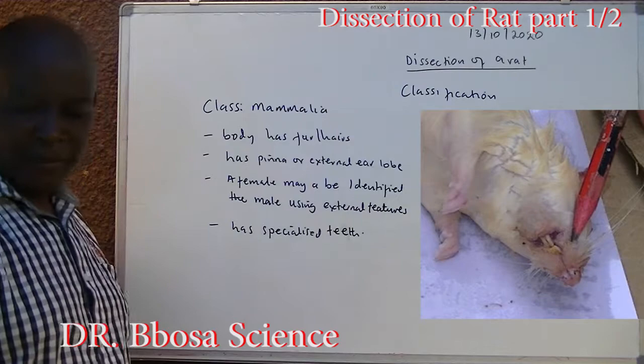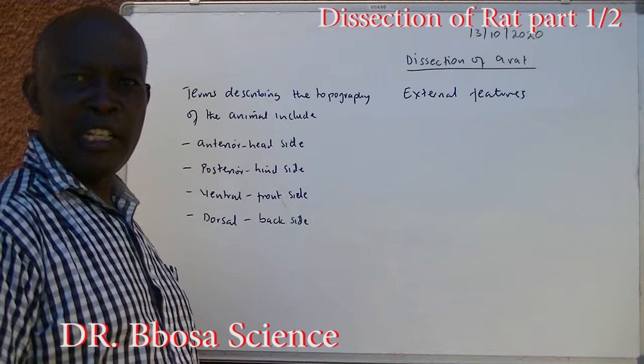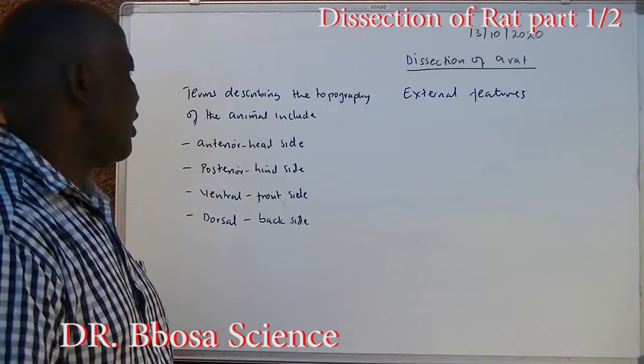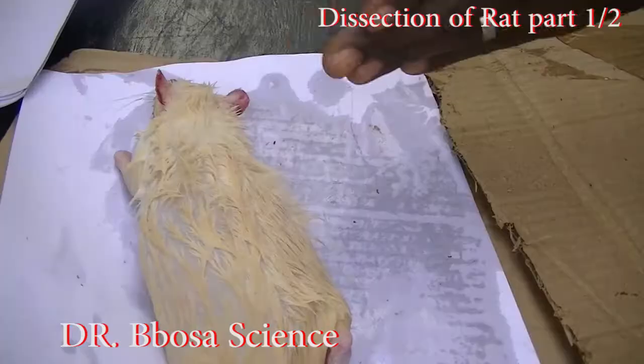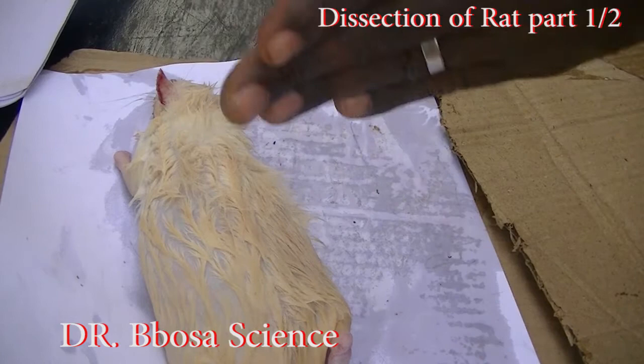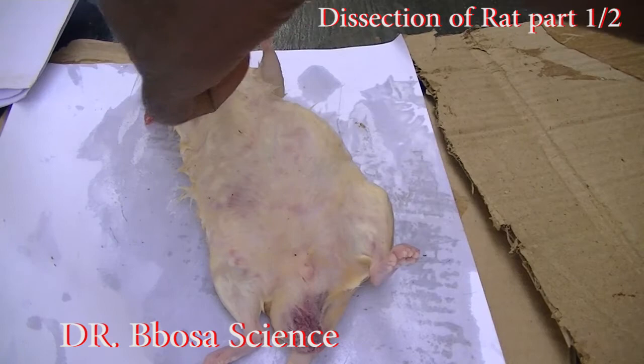External features: before we describe external features, we look at terms describing the topography of the animal. Anterior means the head side; posterior means the hind side; ventral means the front side; dorsal means the back side.